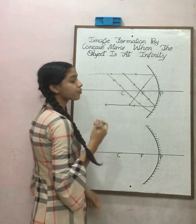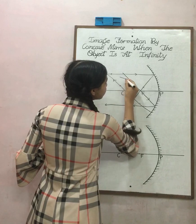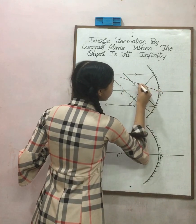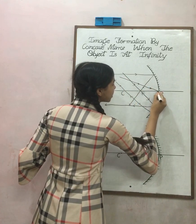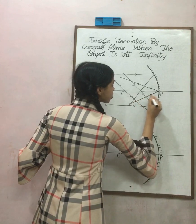And the fourth condition is, if the ray of light strikes at the pole, then it returns back with the same angle through which it comes.